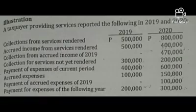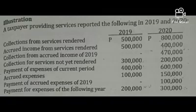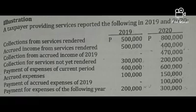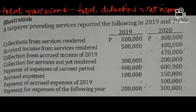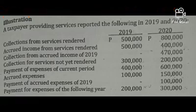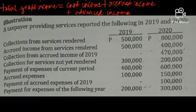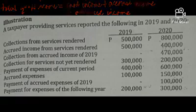Let us now have this illustration. A taxpayer providing services reported the following in 2019 and 2020. We will determine the net income for the years 2019 and 2020 using the tax accrual basis and the tax cash basis. We'll start with the tax accrual basis first. To compute for net income, we determine total gross income first, then deduct total deductions from it.